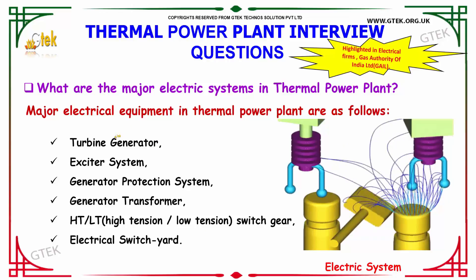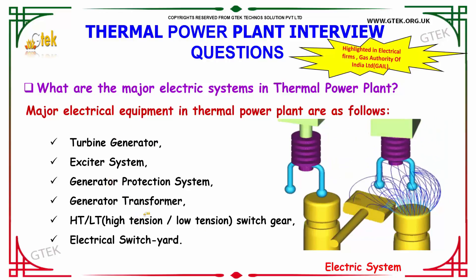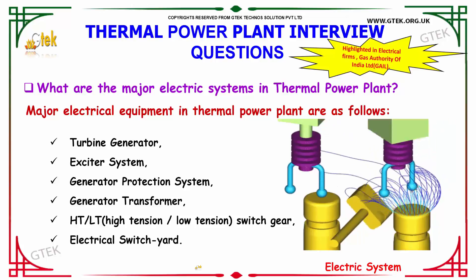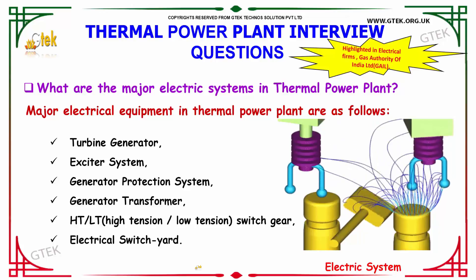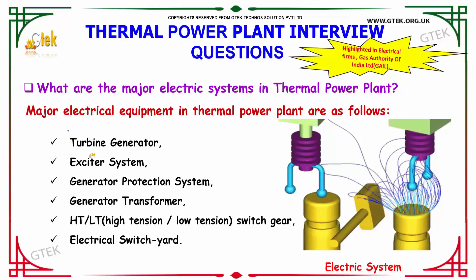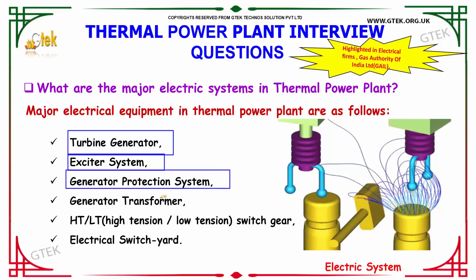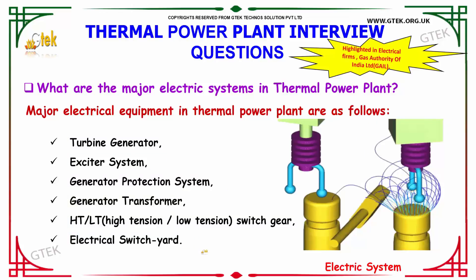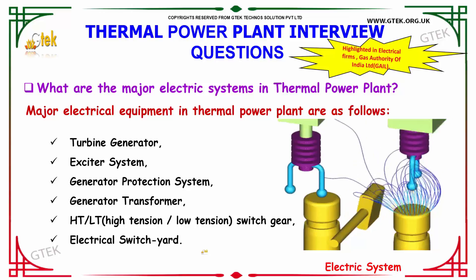What are the major electrical systems in a thermal power plant? The major electrical equipment deployed in the thermal power plant are: the turbine generator, exciter system, generator protection system, generator transformer, high tension and low tension switchgear, and the electrical switchyard.